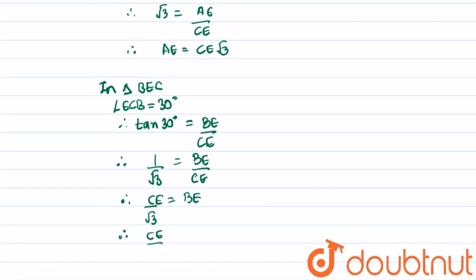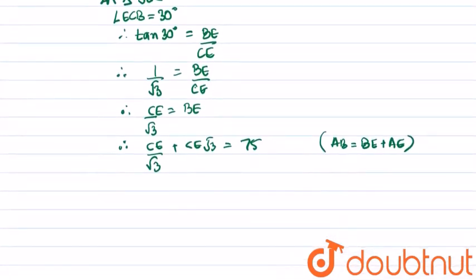Therefore we know that CE upon root 3 plus CE into root 3 equals the total length, that is 75, since AB equals BE plus AE. Therefore we find that the value of CE equals 75 root 3 upon 4.